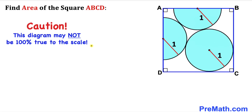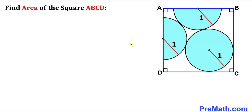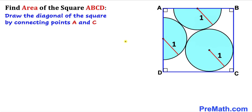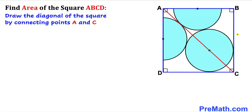Note that this figure may not be 100% true to scale. Let's get started. We draw a diagonal of square ABCD by connecting opposite points A and C. As you can see in the next diagram, this diagonal AC passes through the center of the circle and is also tangent to the two semicircles.